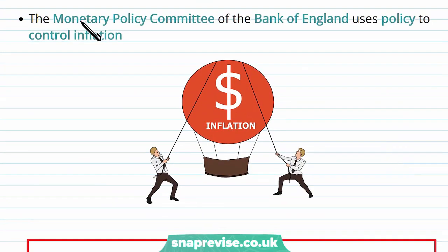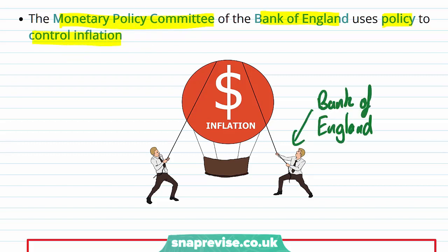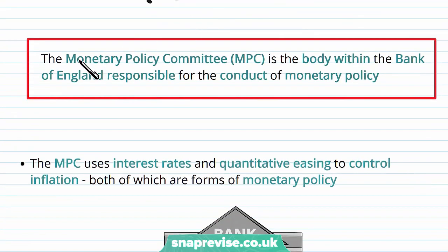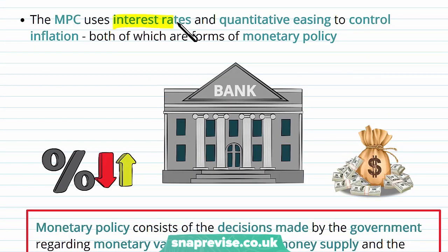The Monetary Policy Committee of the Bank of England uses policy to control inflation. The Bank of England is the central public body in charge of maintaining inflation at that target. The MPC, or Monetary Policy Committee, is the body within the Bank of England responsible for the conduct of monetary policy, and it uses interest rates and quantitative easing to control inflation — both of which are forms of monetary policy.